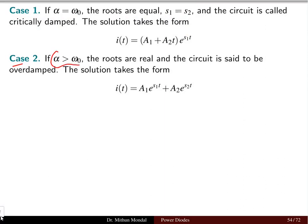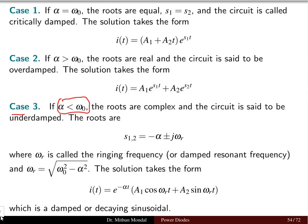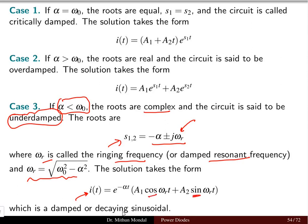Case 2: when alpha is greater than omega_0, the roots are real and the circuit is said to be overdamped. The solution has the form I(t) = a1·e^(S1·t) + a2·e^(S2·t). Case 3: if alpha is less than omega_0, the roots are complex and the circuit is underdamped. The roots are −α ± jω_r, where omega_r is the ringing frequency or damped resonant frequency given by √(ω₀² − α²). The solution is I(t) = e^(−αt)·[a1·cos(ω_r·t) + a2·sin(ω_r·t)], which is a damped or decaying sinusoidal.